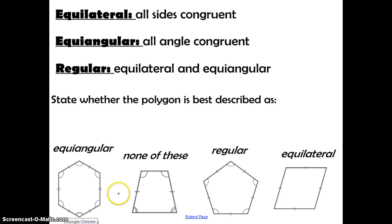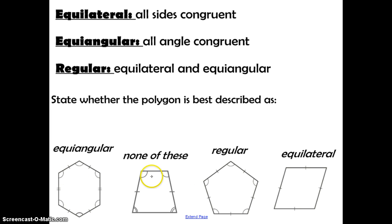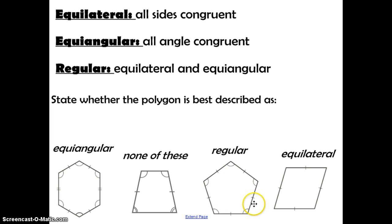Hopefully your answers are correct. This one only has angles marked congruent. This one doesn't have all angles congruent or all sides congruent. This one has all angles and all sides congruent. And then this one only has sides that are congruent.